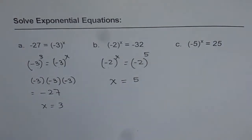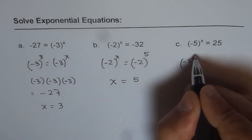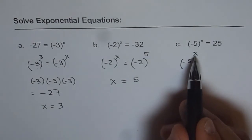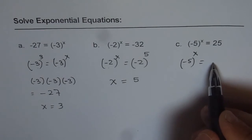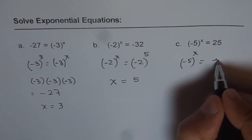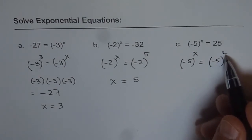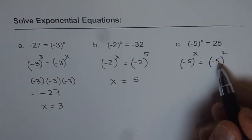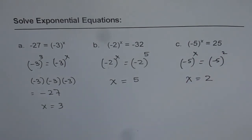That is the strategy to solve such exponential equations. For the next one, minus 5 is the base and we need to find the exponent x. For that, we need to write 25 as minus 5 to the power of something. That something is 2 — when you square minus 5, you get 25. Therefore, the answer is x equals 2.